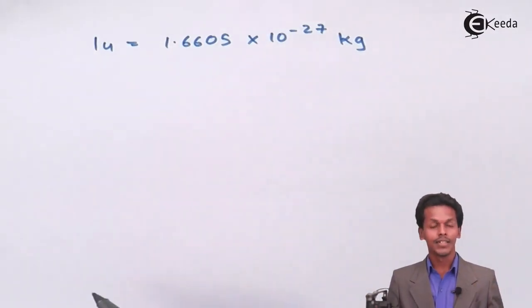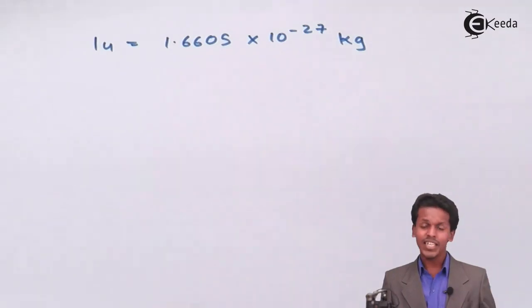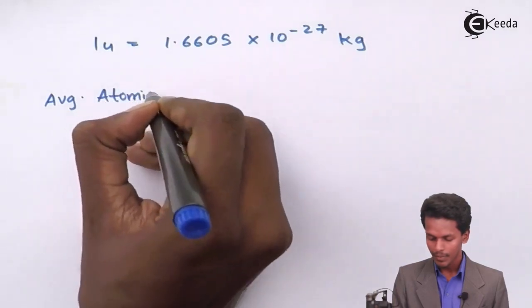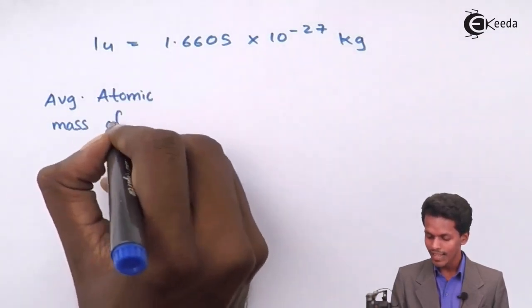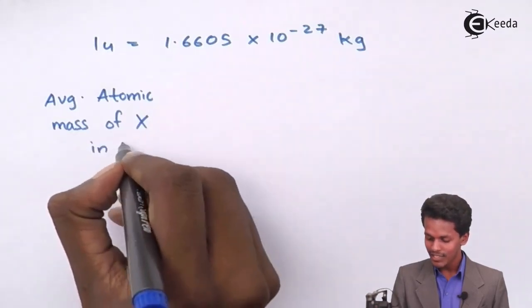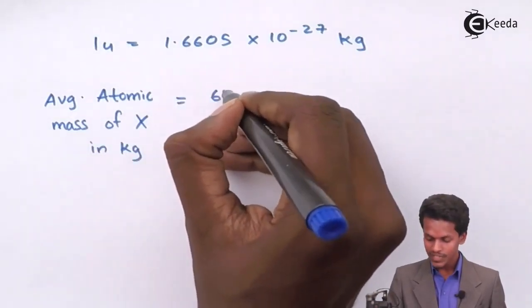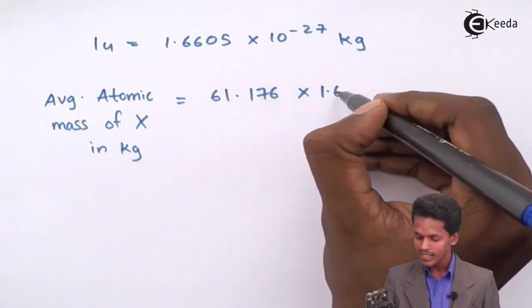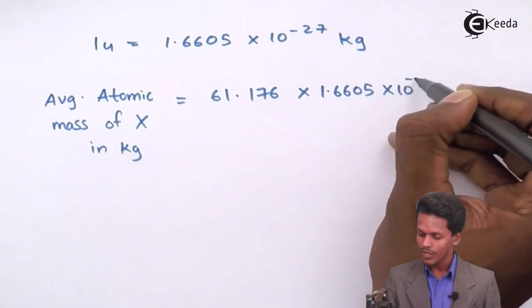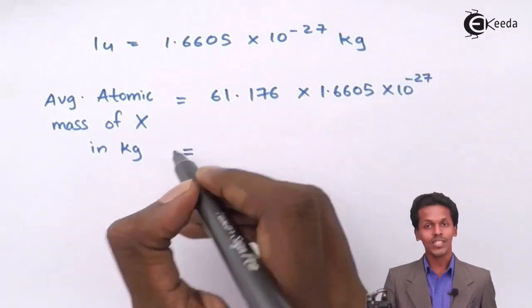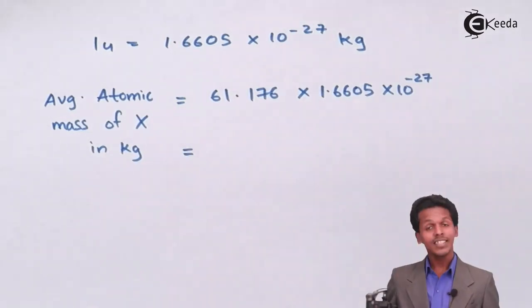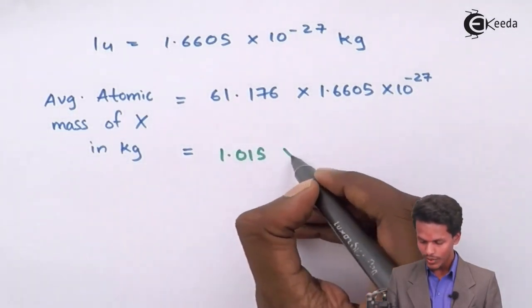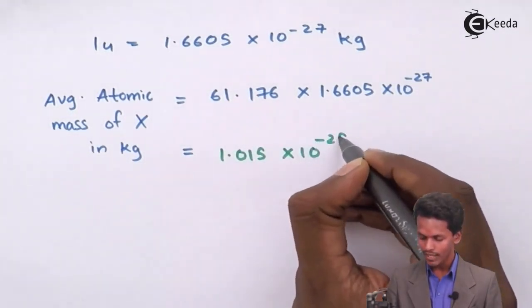The average atomic mass of X in kg will be 61.176 u multiplied by 1.6605 × 10⁻²⁷ kg. The answer we get is 1.015 × 10⁻²⁵ kg.